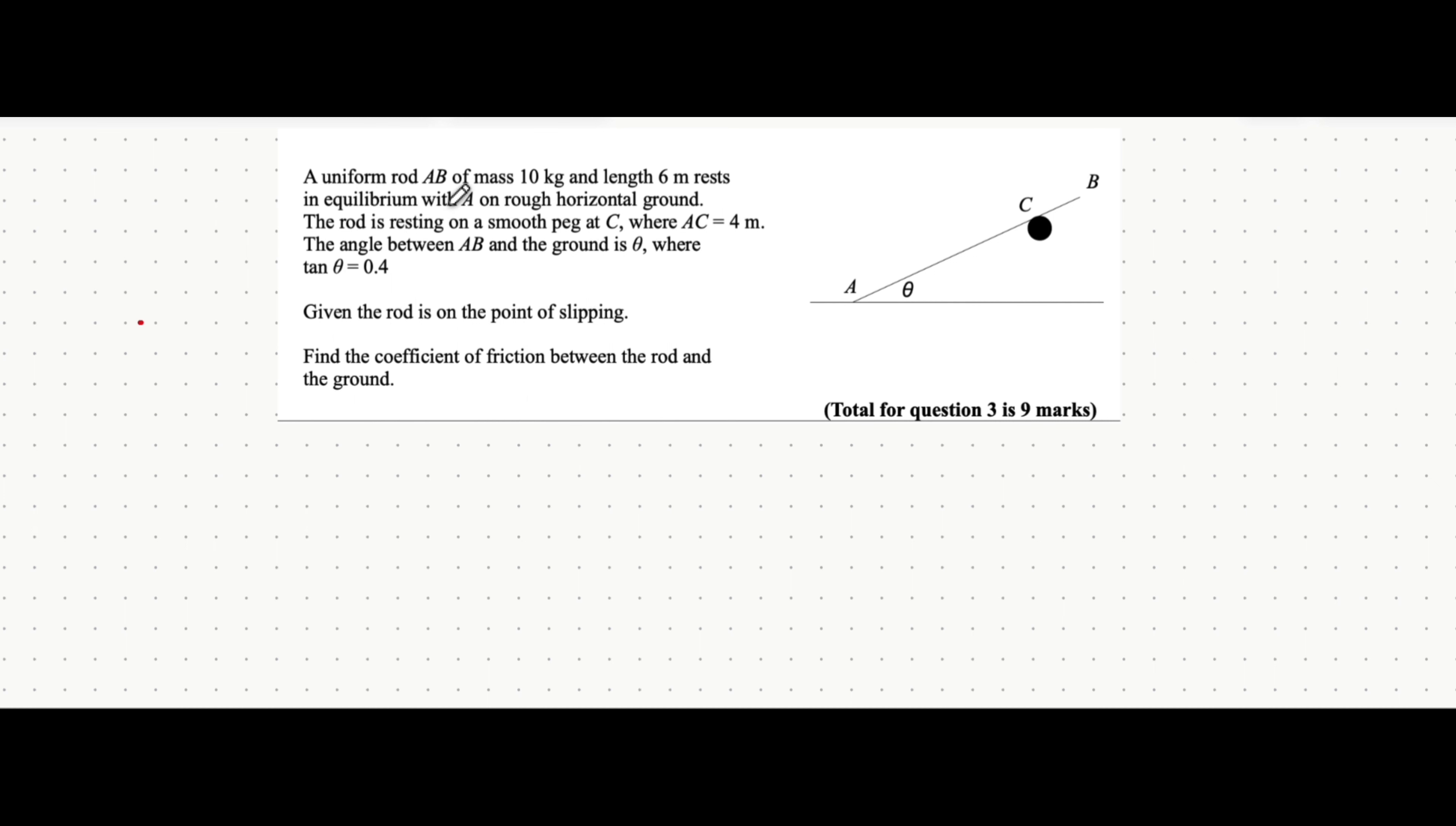Let's start by labeling all the forces acting on the diagram. It tells you there's a uniform rod, so straight away uniform means that all the weight is at the center. Weight is just the mass multiplied by acceleration due to gravity. Because it's also giving you the mass of the rod, it also tells you the length of the whole rod.